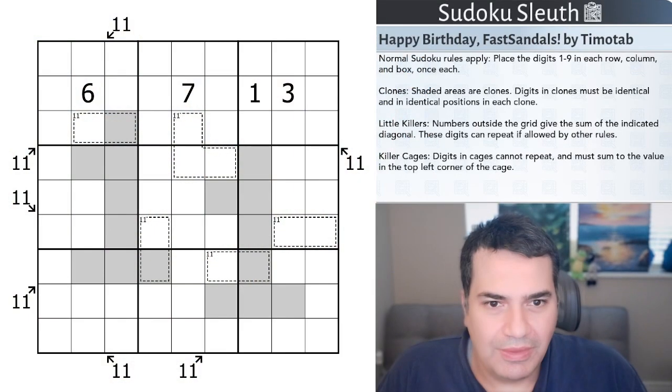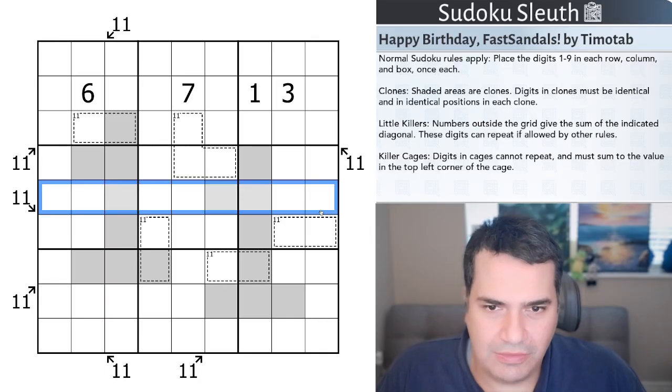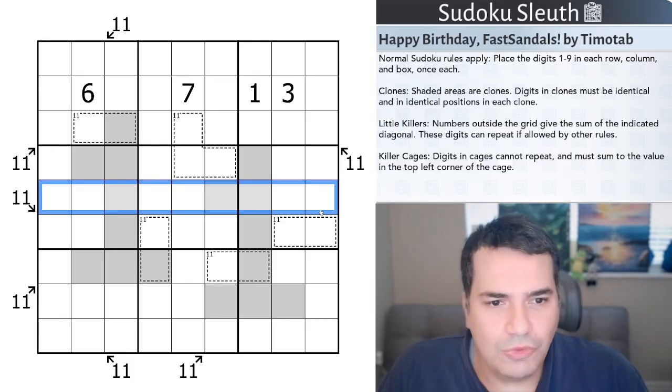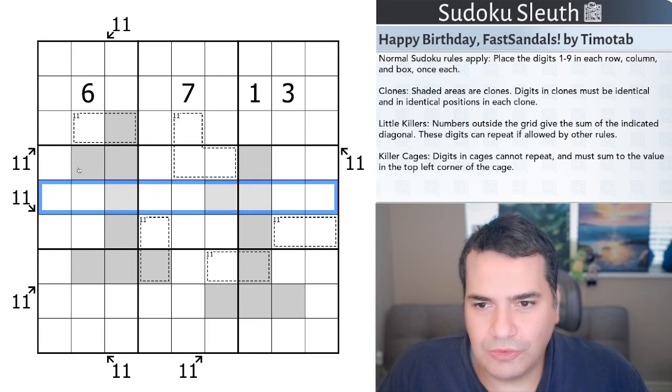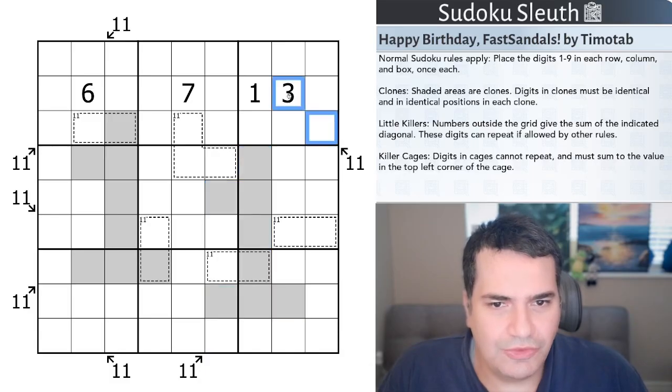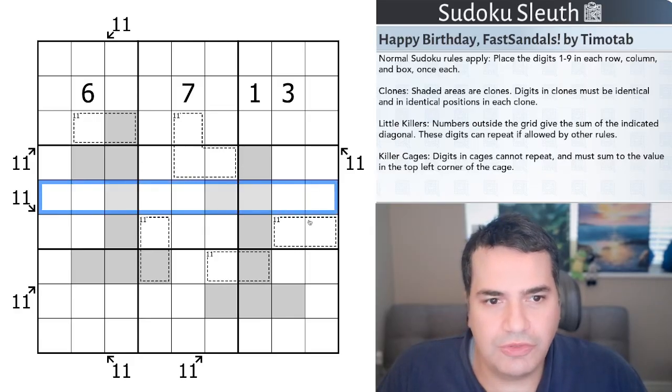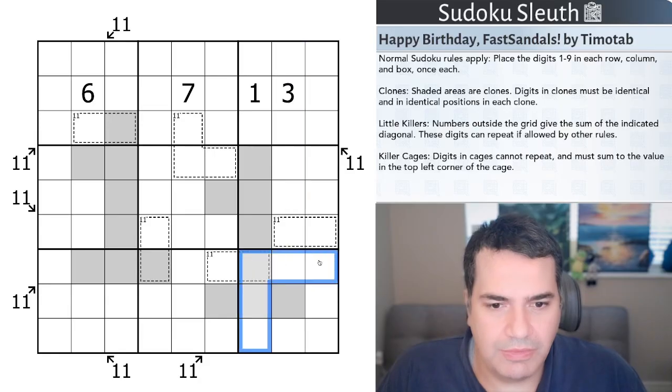So today's puzzle is, as I mentioned, Happy Birthday to Fast Sandals from Timotab. And it's got references to 11 everywhere. I'm absolutely certain I'm not imagining this. I think where the puzzle was posted had, essentially, a photo from Lord of the Rings of that particular birthday party. Rules-wise, I'm kind of wondering, Timotab, if this feels like much of a party. I mean, you've got clones, so Fast Sandals is going to a party to get cloned. That doesn't sound like fun. There are little killers everywhere. And then finally, there are killer cages. Let's see if we can make something of all of it. Rules-wise, we've got normal Sudoku rules apply. That means place the digits 1 to 9 once each in every row, every column, and every 3x3 box. This is fairly normal.